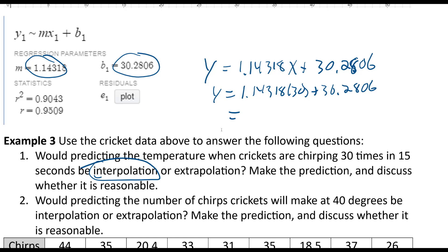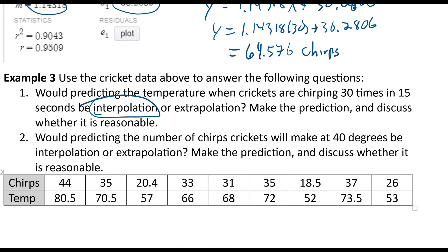I'm just talking to you as I put in the calculator, I get 64.576 chirps. I guess this is per 15 seconds, I thought this was per minute. So then I think it's a reasonable answer. It falls within the data type, the data answers, the outputs.